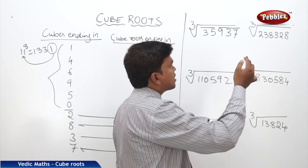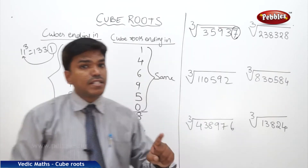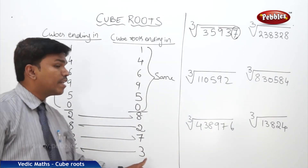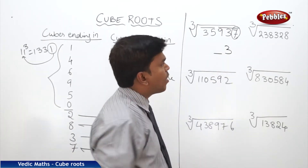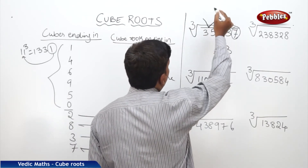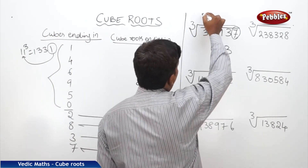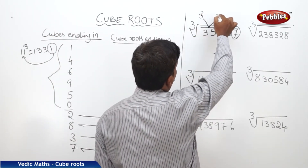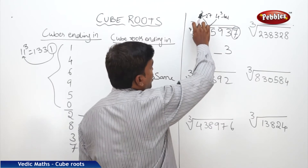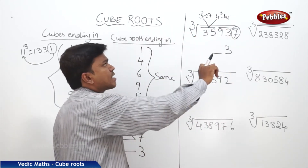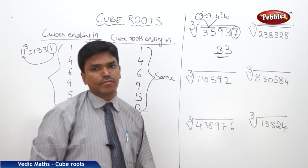The second step: check which digit the cube number ends in. It's 7. If a cube number ends in 7, its cube root should end in 3. So the ending digit of the answer is 3. Now come to the second partition, which is 35. We ask: 35 comes between which cube numbers? It comes between 3 cubed (27) and 4 cubed (64). But we always take the lesser number, which is 3. So the answer is 33.